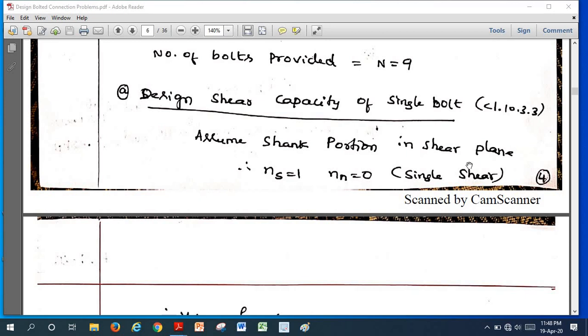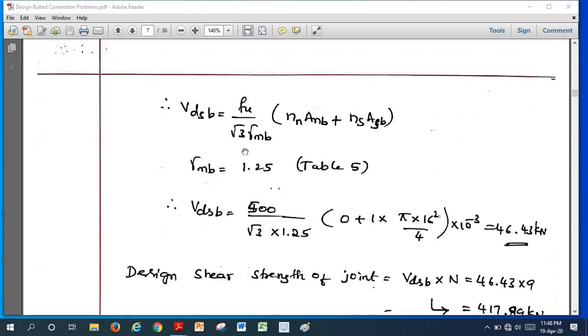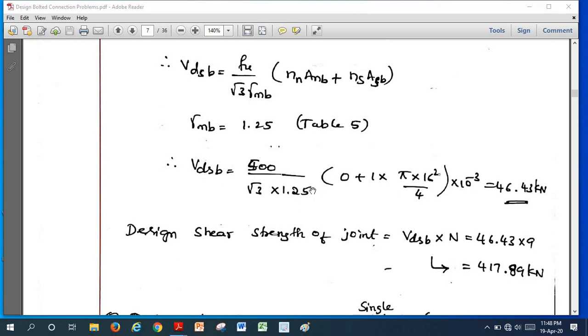So that means bolts are subjected to single shear. I am assuming strength portion falls in shear plane, taken nₛ = 1 and nₙ = 0 since it is single shear. If we substitute the formula Vdsb = fᵤᵦ/(√3 γₘᵦ) × (nₙ nᵦ + nₛ Aₛᵦ), and γₘᵦ we should take from table number 5 for bolts. If we substitute the formula here, we are going to get 46.43, this is the value of single bolt in shear in this joint.